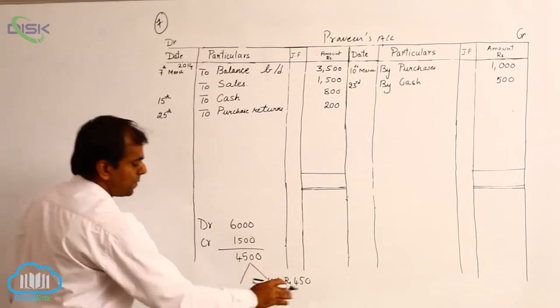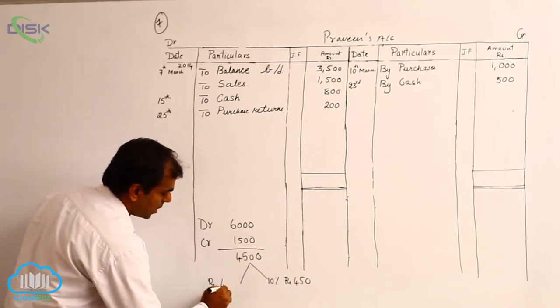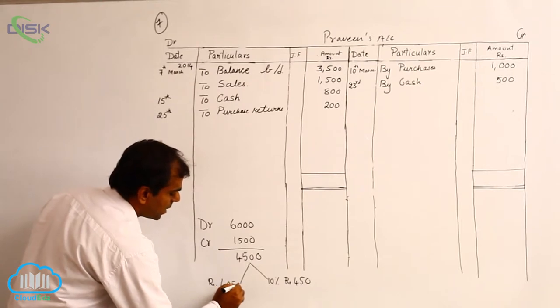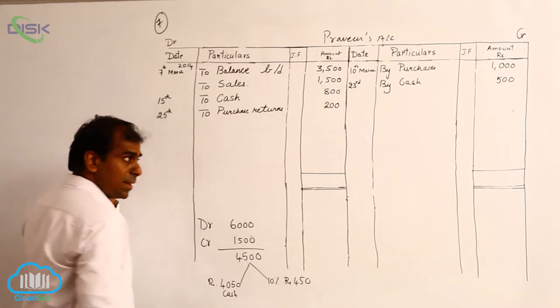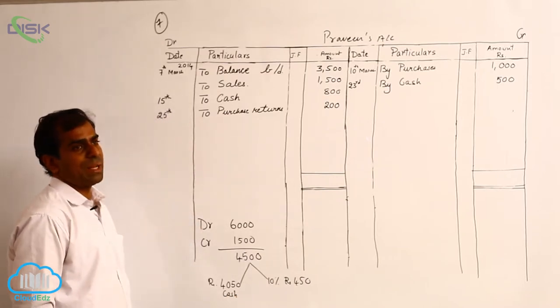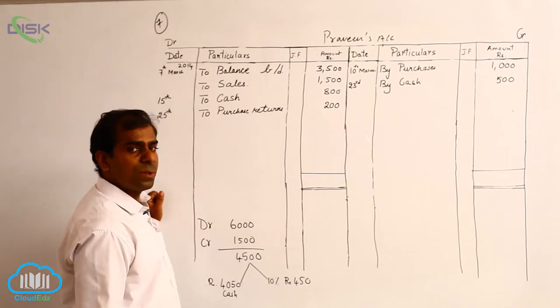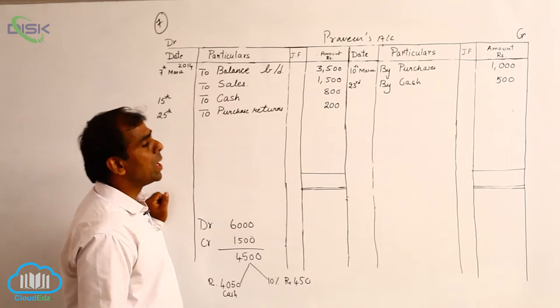From 4,500, if you remove 450, you get rupees 4,050. So Praveen is giving us a cash of 4,050. When he is giving us cash, our entry would be cash account debit to Praveen's account.